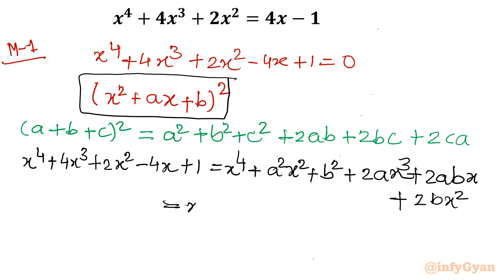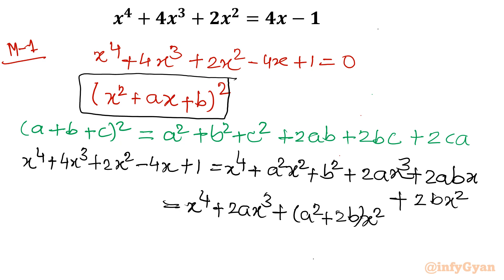We can simplify the right hand side by collecting respective terms. So I will write x⁴ plus 2ax³ plus (a² + 2b)x² plus 2abx plus b². You can check — 2 to 4 to 6 terms are there, so exactly it is matching.